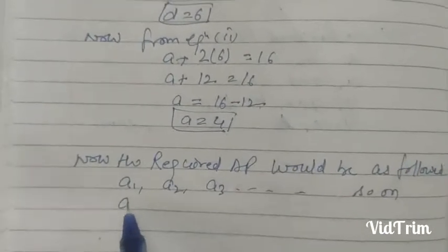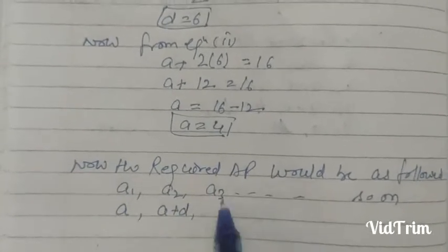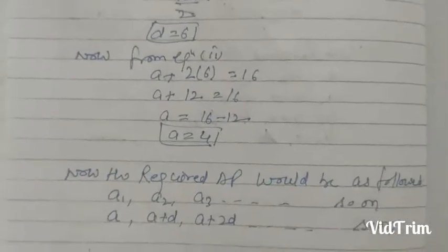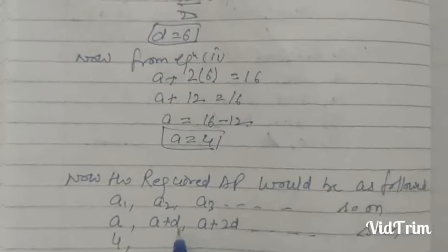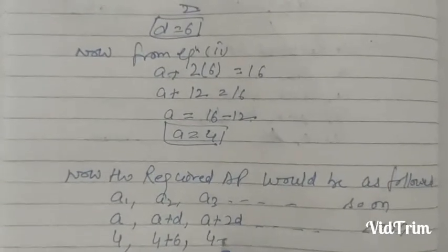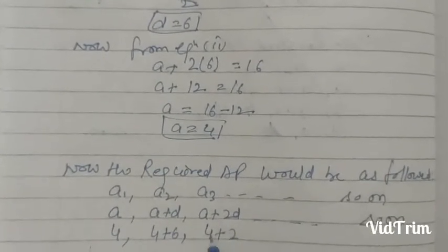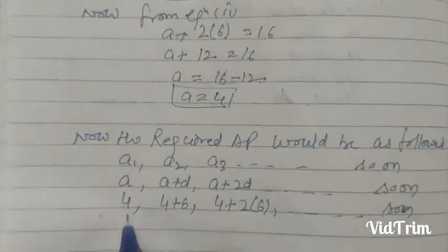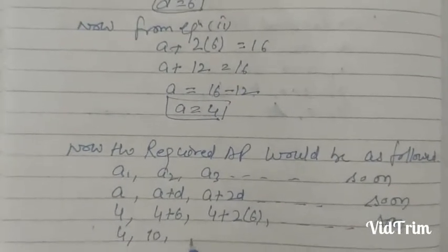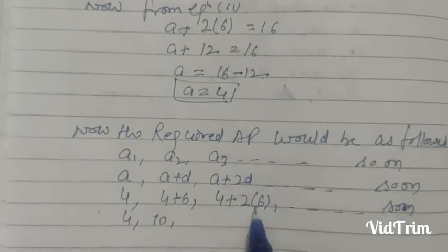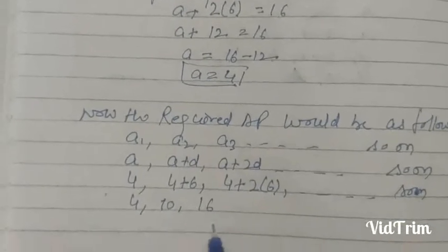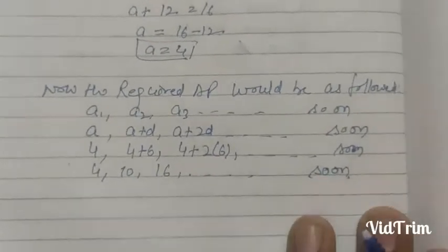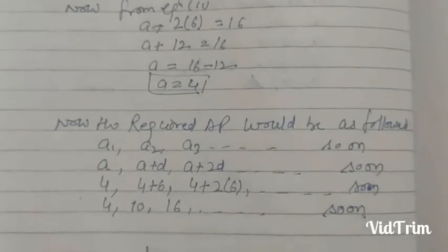A1 = A = 4, A2 = A + D = 4 + 6 = 10, A3 = A + 2D = 4 + 12 = 16, and so on. So the required AP is 4, 10, 16, and so on. Pause the video and note it down.